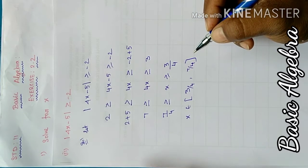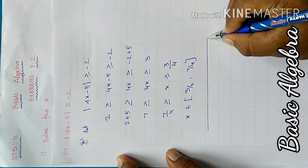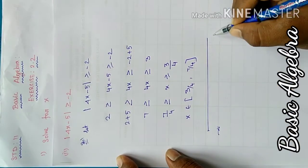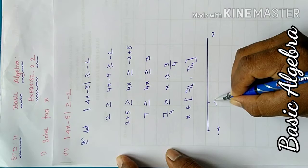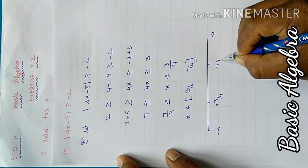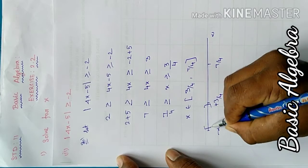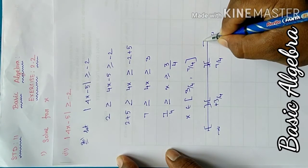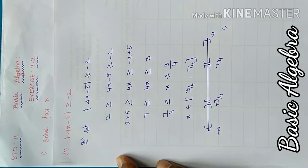On the x-axis from negative infinity to positive infinity, we mark the points 3/4 and 7/4. Hence proved.